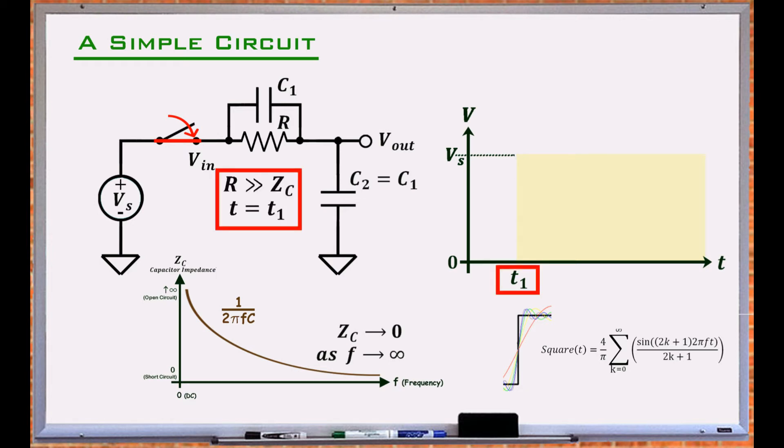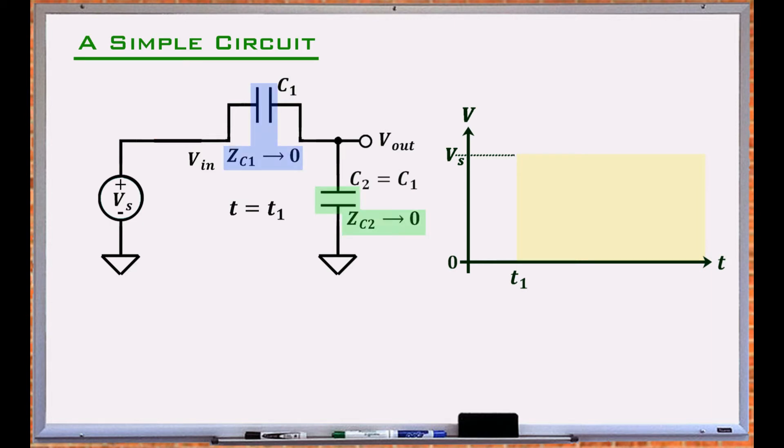At T1, the resistor has a resistance infinitely larger than the impedance of the capacitors, and it can be ignored. Therefore, the circuit can be simplified to a voltage divider, and having identical capacitors the output becomes half of Vin.